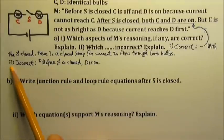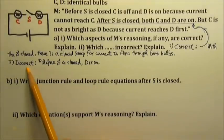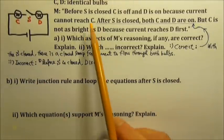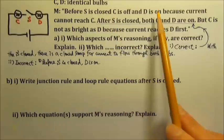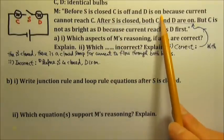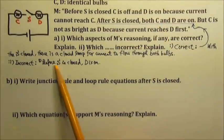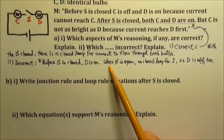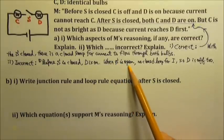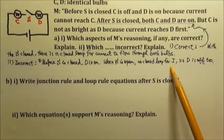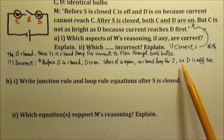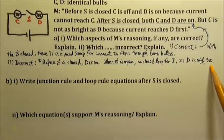Part A2: One incorrect aspect is that before the switch is closed, bulb D is on. When the switch is open, there is no closed loop for current to flow, so D is off too.